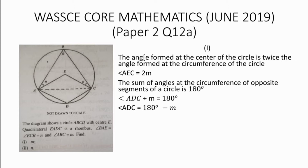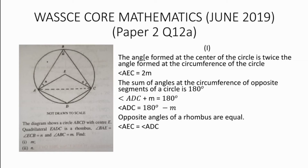By making angle ADC the subject, we have angle ADC equals 180 degrees minus m. Moreover, opposite angles of a rhombus are equal, so angle AEC equals angle ADC. We know angle AEC is 2m, which equals angle ADC, which is also 180 degrees minus m.